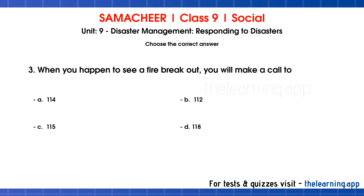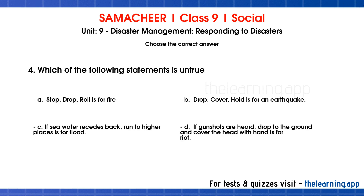Question 3: When you happen to see a fire break out, you will make a call to which number? Options are A. 114, B. 112, C. 115, D. 118. Correct answer is B. 112.